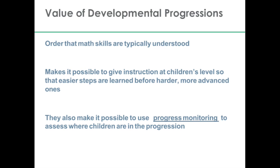It's a feature of math learning in particular that you can find these progressions — you can find an order in which children typically learn these early math skills. Given that we can identify a developmental progression for how children learn in this area, it has real advantages. One thing is if we know where the child is on the progression, we can actually give instruction at the child's level so that we can pitch the instruction at the right level for the child's understanding.